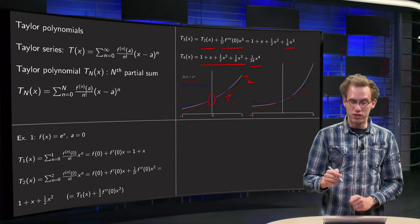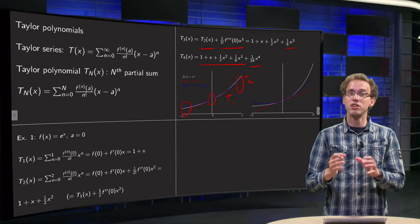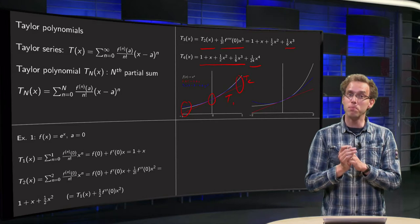If you go a bit further away, then the T1 is not such a good approximation, but the T2 is still fine. So you see the T2 of x approximates the function pretty well.